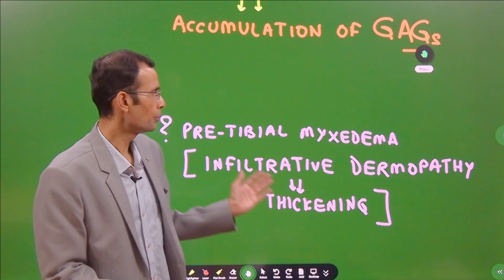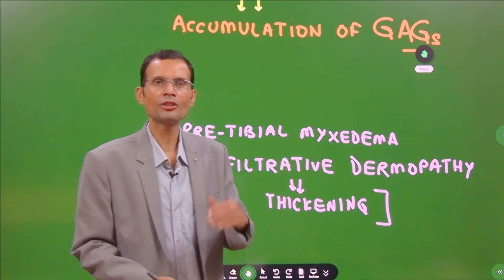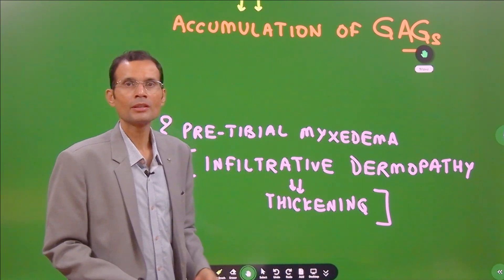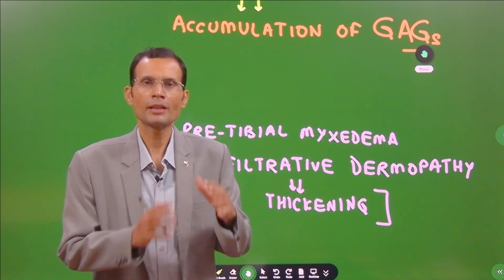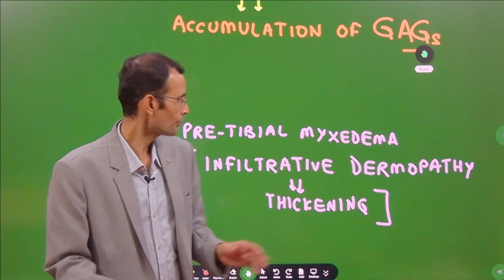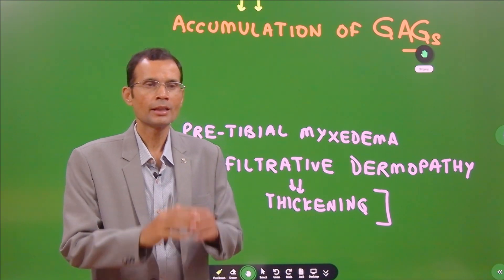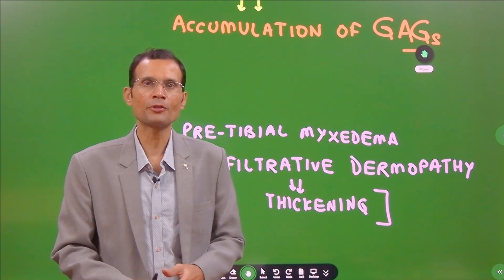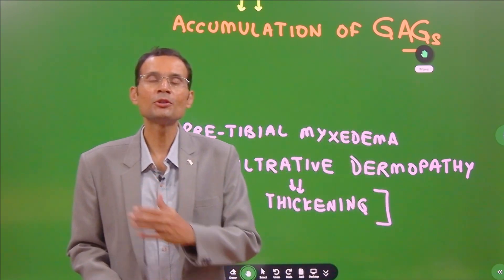Finally, just another variant: pretibial myxedema. We can call it pretibial edema because myxedema we may reserve the term for hypothyroidism. This is seen in thyrotoxicosis—that is hyperthyroidism, Graves' disease. In this, there is infiltrative dermopathy. There is thickening of the skin and the subcutaneous tissue, the ECM. It's thickened, and therefore it also is seen like a non-pitting type of edema. These are the reasons or the pathophysiology of the non-pitting type of edema.